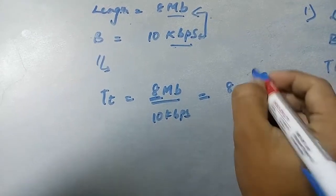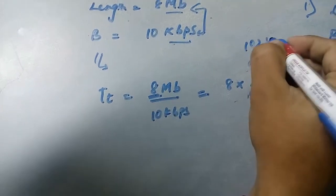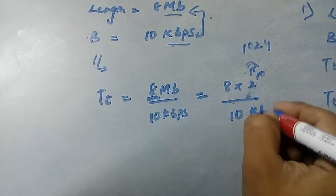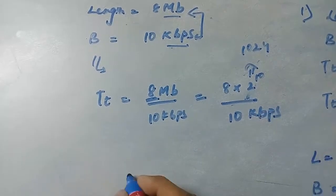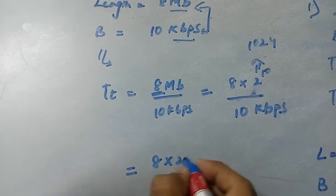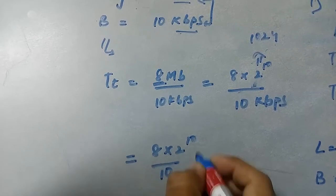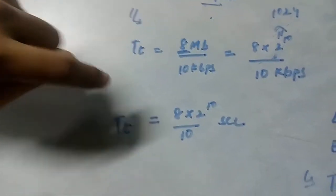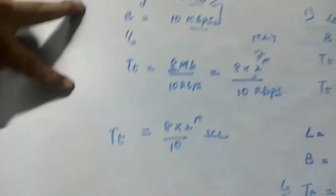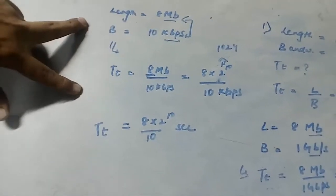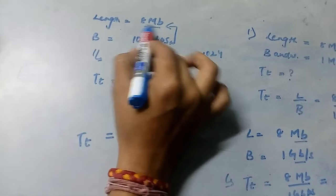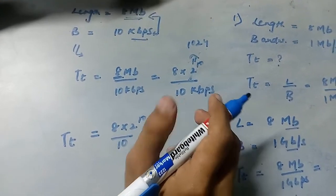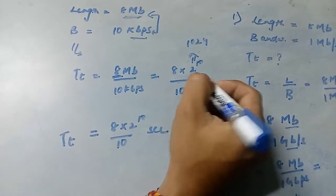That is 1024, divided by 10 KBPS. So the answer is 8 into 2 raised to 10, divided by 10 seconds. The length of the packet is always measured in bits, which is why we use 2 raised to 10 for megabytes.